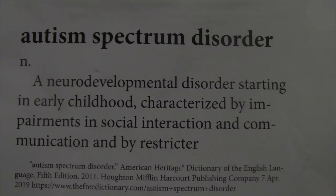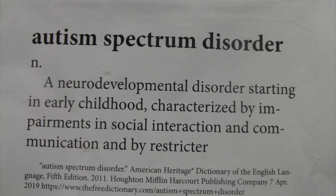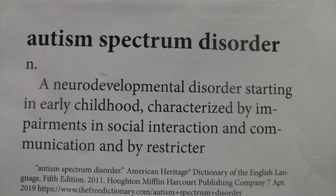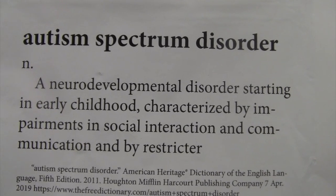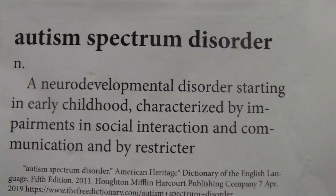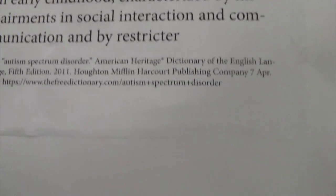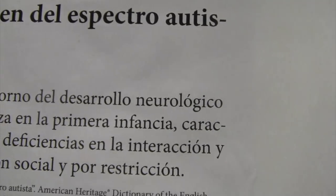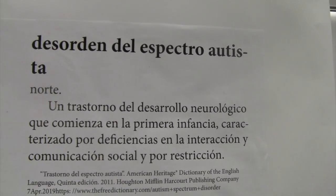You're still here? Well, I guess you want to learn more then. Autism Spectrum Disorder is a noun — it's a neurodevelopmental disorder starting in early childhood, characterized by impairments in social interaction and communication by restrictors. I also got that Spanish version for you people that speak Spanish.